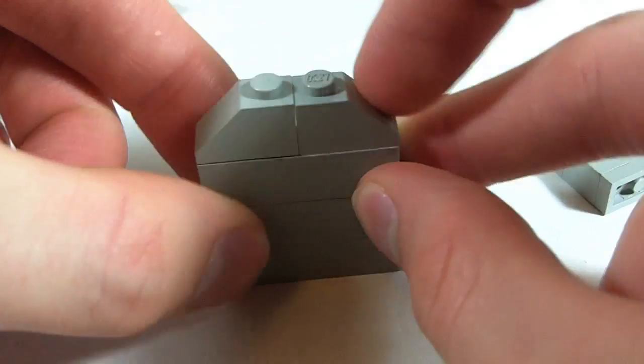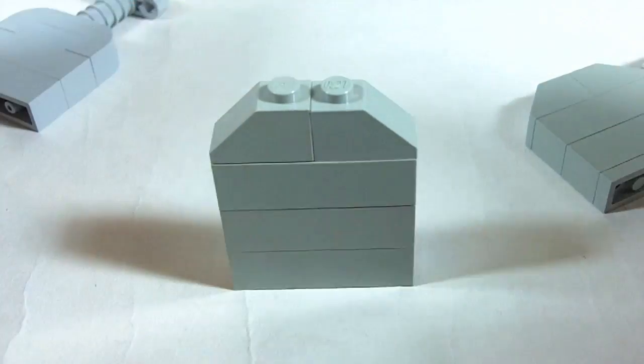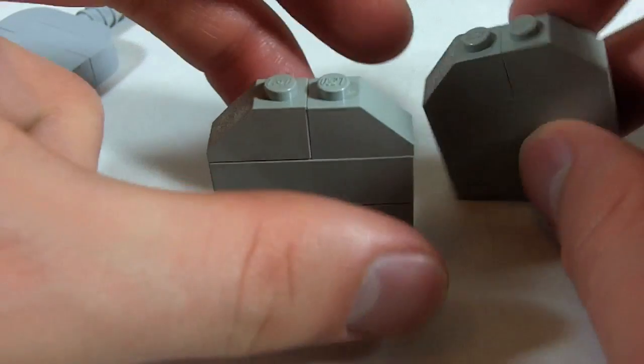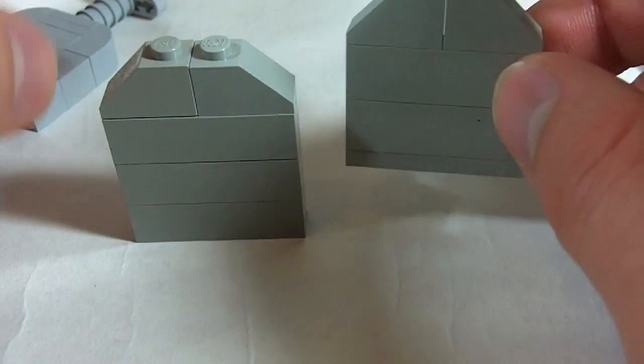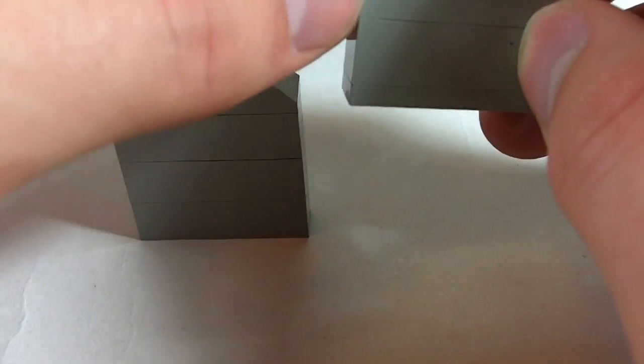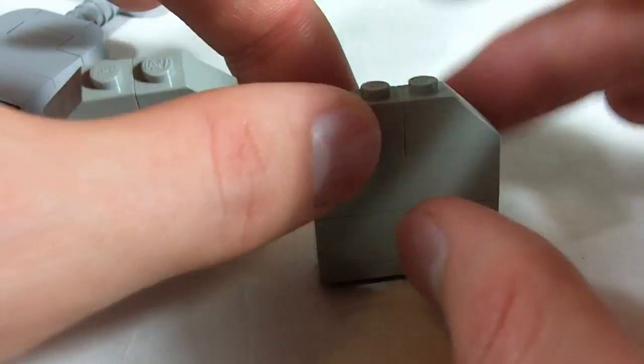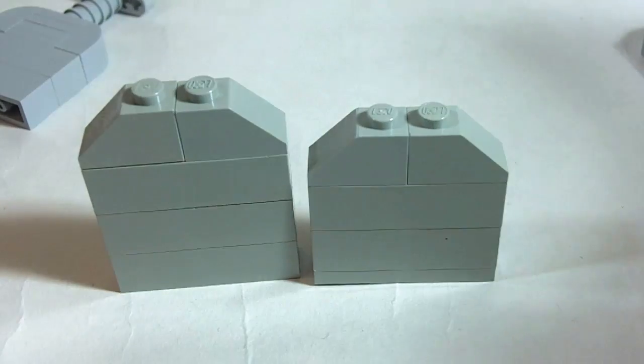And then two 1x2 downward slopes on top. Depending on how big you think your gravestone should be, you could also do just two 1x4 bricks with maybe some 1x4 plates for different sizes.